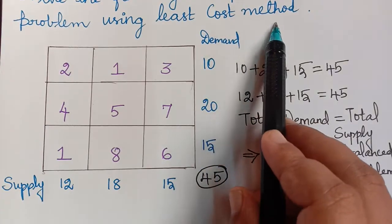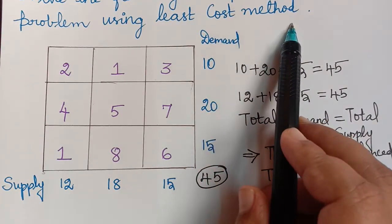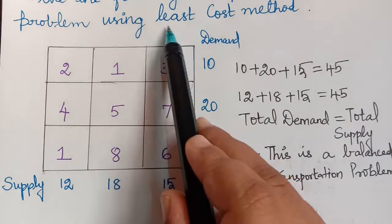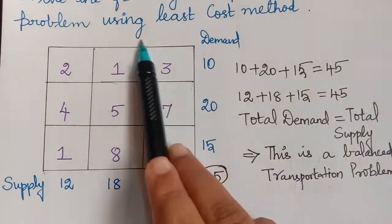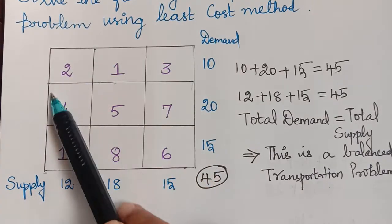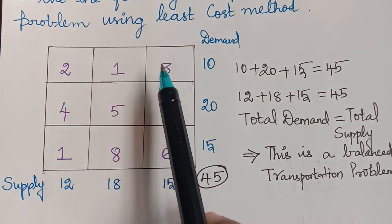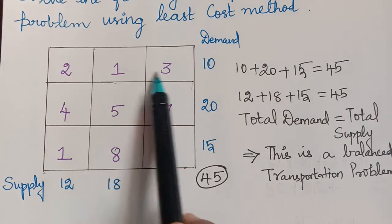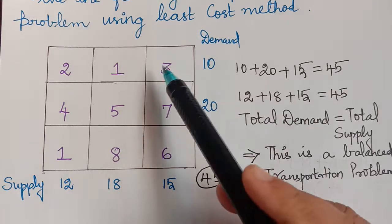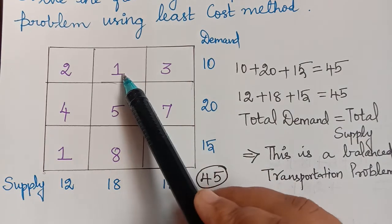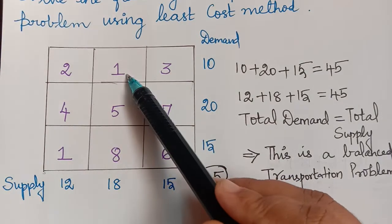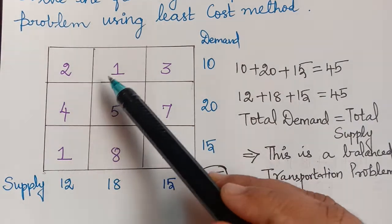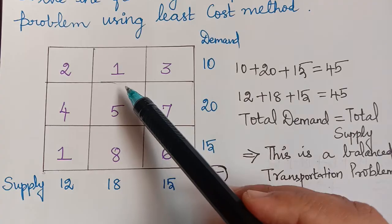We are going to solve this using the Least Cost Method. By the name itself, we understand that we have to start giving allotments to the cell with the least cost. Out of all the cost entries given, we choose the least cost and give the allotment for it. Looking at the values, the least cost is 1, but it has appeared twice — in two different cells.